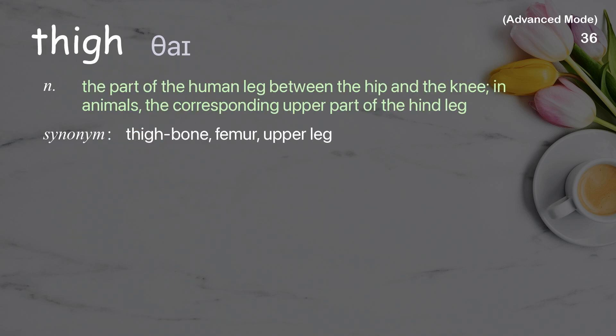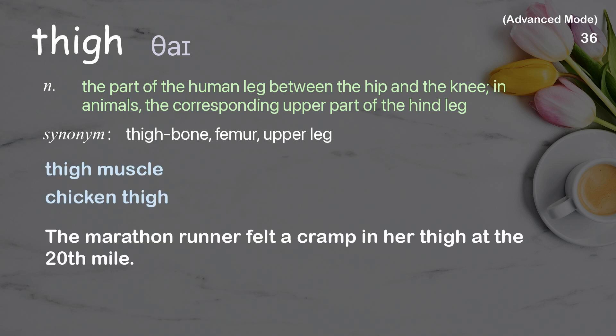Thigh: the part of the human leg between the hip and the knee; in animals, the corresponding upper part of the hind leg. Examples: thigh muscle, chicken thigh. The marathon runner felt a cramp in her thigh at the 20th mile.